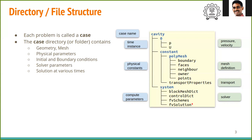To summarize, the constant folder contains all physical parameters and the system folder contains all computational parameters.